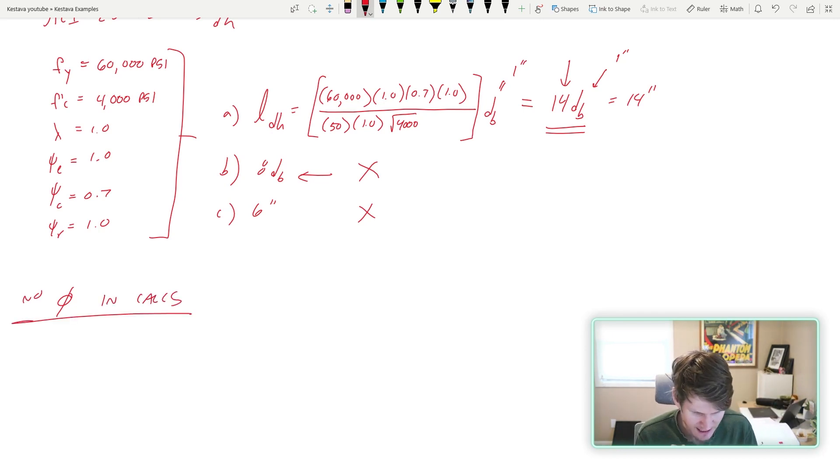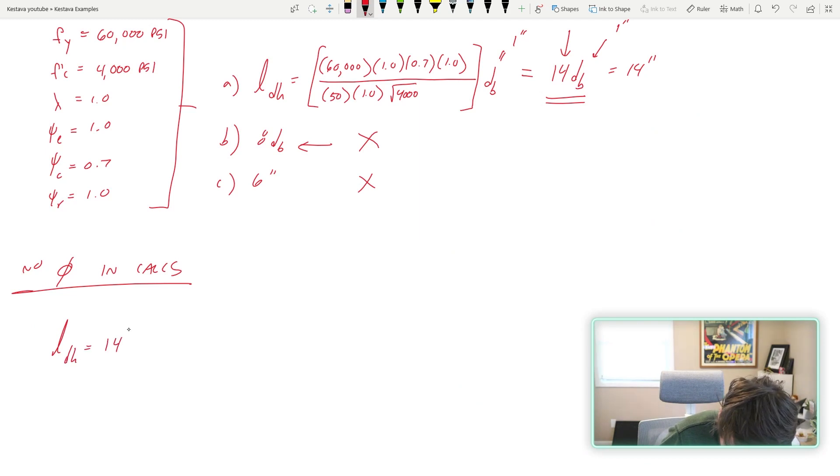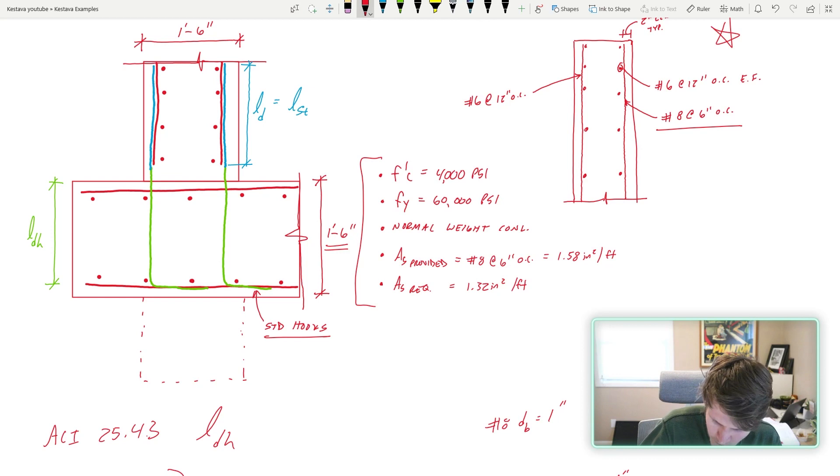A little side note I want to point out is that there is no phi in your calculations. This is actually stated in the commentary in section 25.4.1.3. They do not require a phi factor, and then in the commentary next to it it's already lumped into the equation that they provided that we were using to solve. So Ldh equals 14 inches.